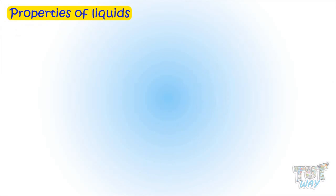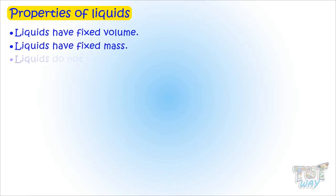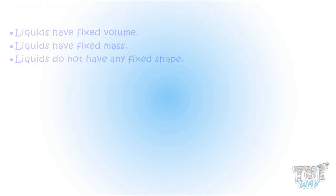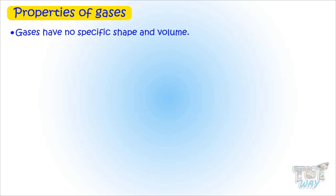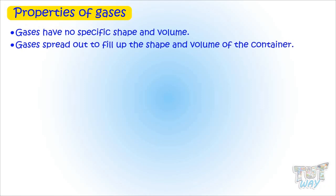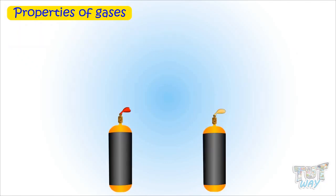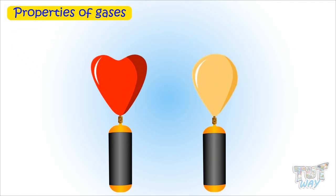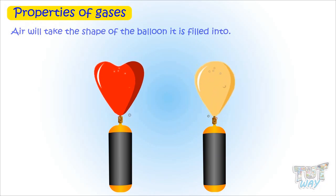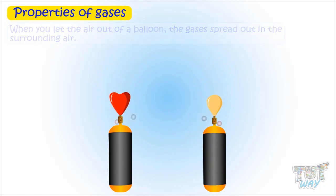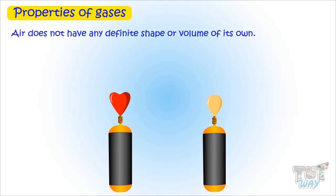Liquids have fixed volume and mass but not fixed shape. Now let's learn about the gaseous state. Gases do not have specific shape and volume — they spread out to fill up the shape and volume of their container. Take two balloons of different shapes and fill them with the same amount of air: the air takes the shape of the balloon it is filled into. When you let the air out, the gas spreads out into the surroundings. So air does not have any definite shape or volume of its own.